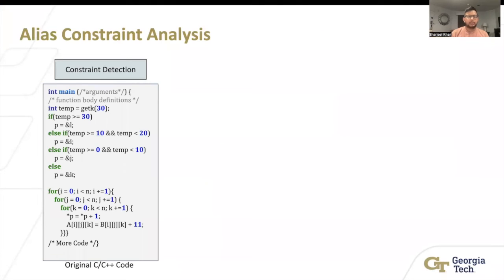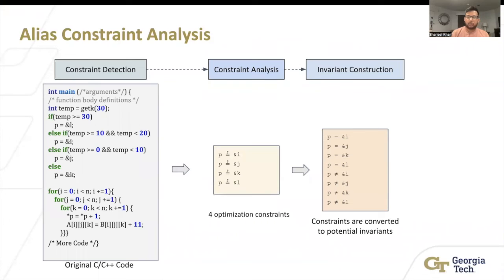For example, this is a very simple code. You have a pointer p, it could point to L or I or J or K, right? But you're not sure about that. So these are basically your constraints, because it depends on the temp variable, which is defined by some other function. Now, the invariants are basically either p points to i or p doesn't point to i, right? That's pretty much it. We try all the different cases and see which ones are actually getting verified.